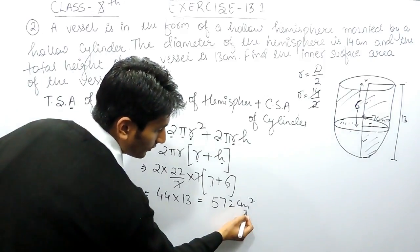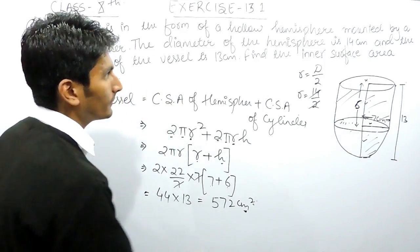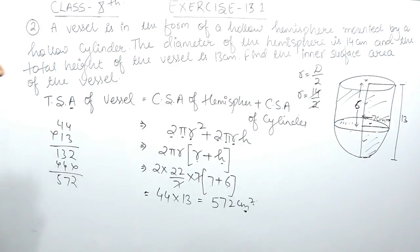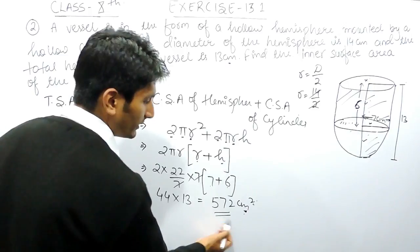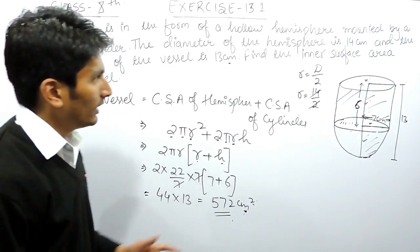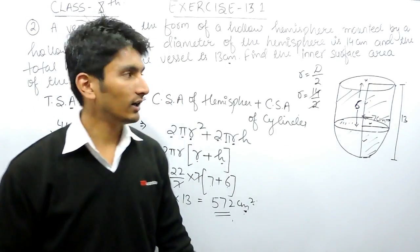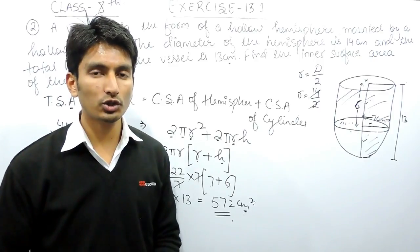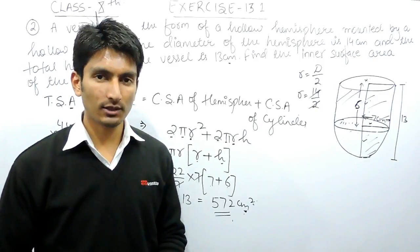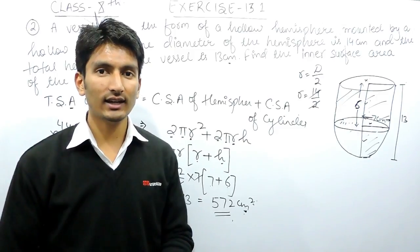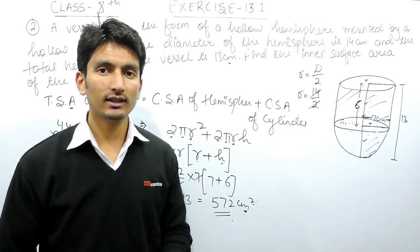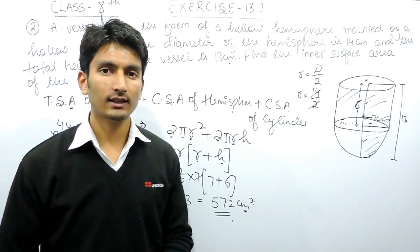Since this is a curved surface area and the dimensions are in centimeters, the answer is 572 centimeters squared. This is how you solve this question. If you like this video, please subscribe to our channel. If you have any problem in maths, you can contact us — the phone number, email address, and WhatsApp number are given in the description. Thank you.